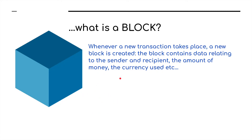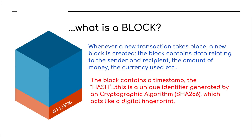Whenever a new transaction takes place, a new block is created. The block contains data relating to the sender, the recipient, the amount of money, and the currency used for that transaction. It also contains a timestamp, also known as a hash — a unique identifier generated by a cryptographic algorithm. This is also known as the SHA-256, which acts like a digital fingerprint for that particular block, making it unique.